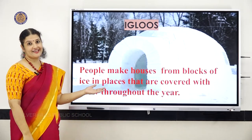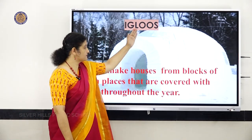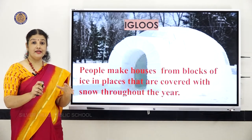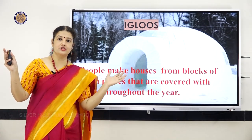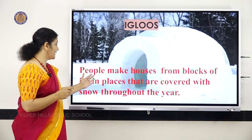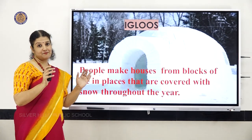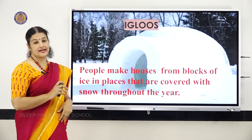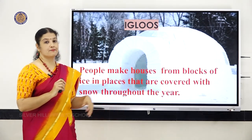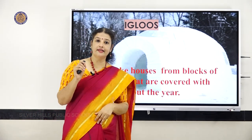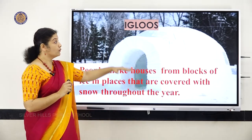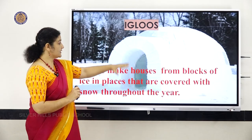Igloos are a very rare type of house. They are dome-shaped and are built in areas with heavy snowfall — areas covered with snow throughout the year. Igloos are built with blocks of ice. A special type of people known as Eskimos or Inuits live in this type of house. So igloos are dome-shaped houses made of ice.